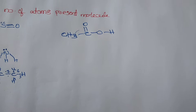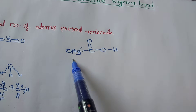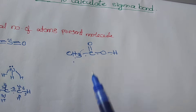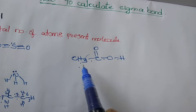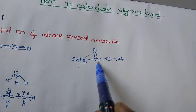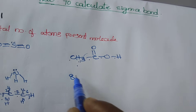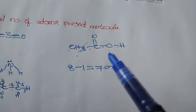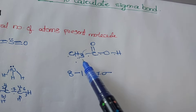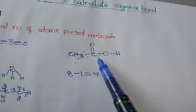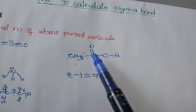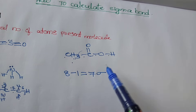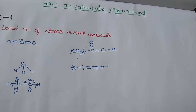Next, acetic acid. How many sigma bonds? Counting from the structure: one, two, three, four, five, six, seven — seven sigma bonds. According to the formula, there are eight atoms, so eight minus one equals seven sigma bonds. Three sigma bonds with hydrogens, carbon-carbon one, carbon-oxygen one, carbon-oxygen one, and oxygen-hydrogen one — seven sigma bonds confirmed.